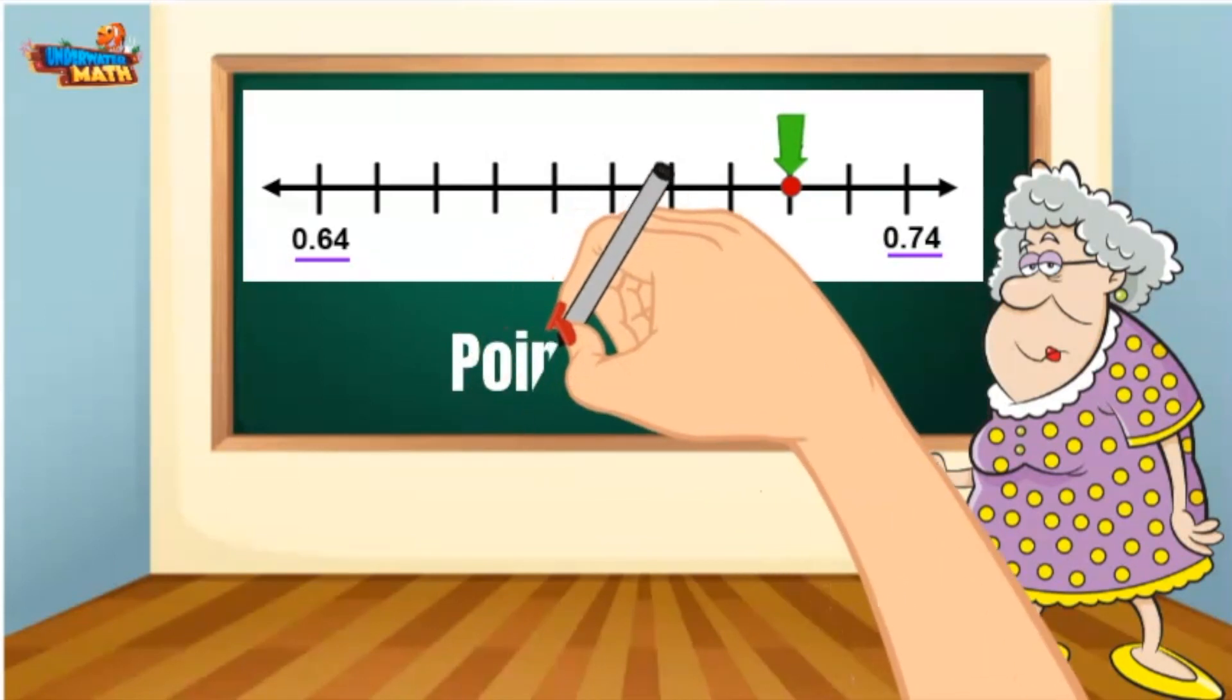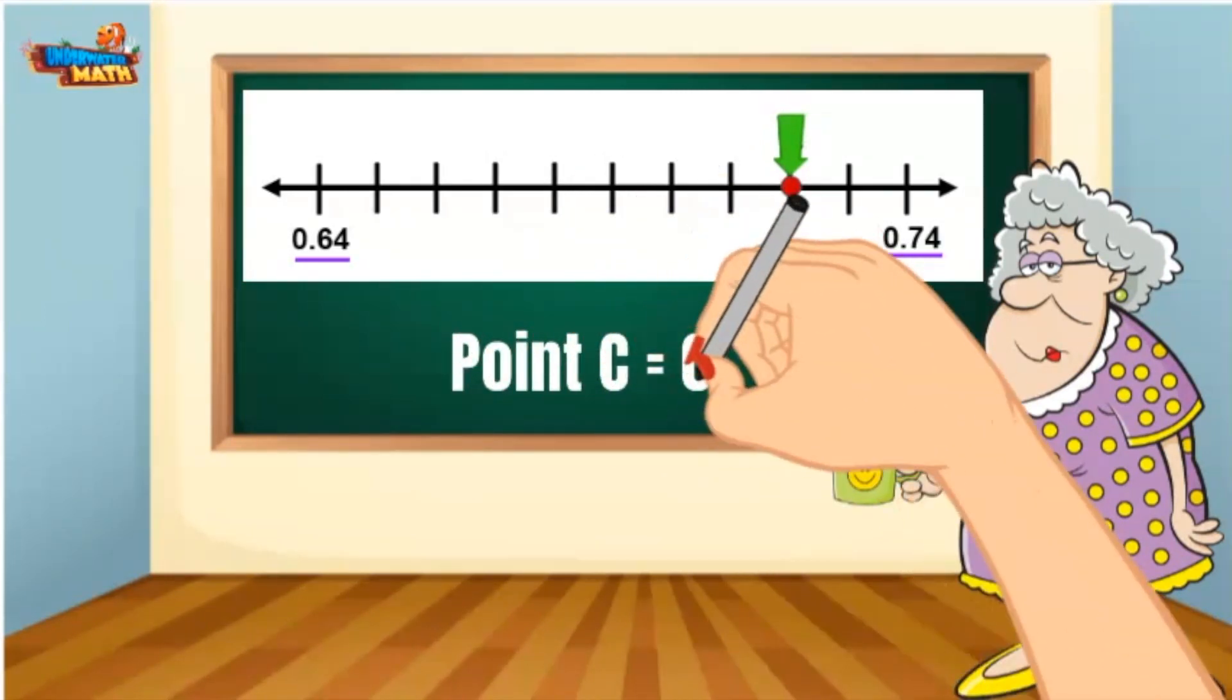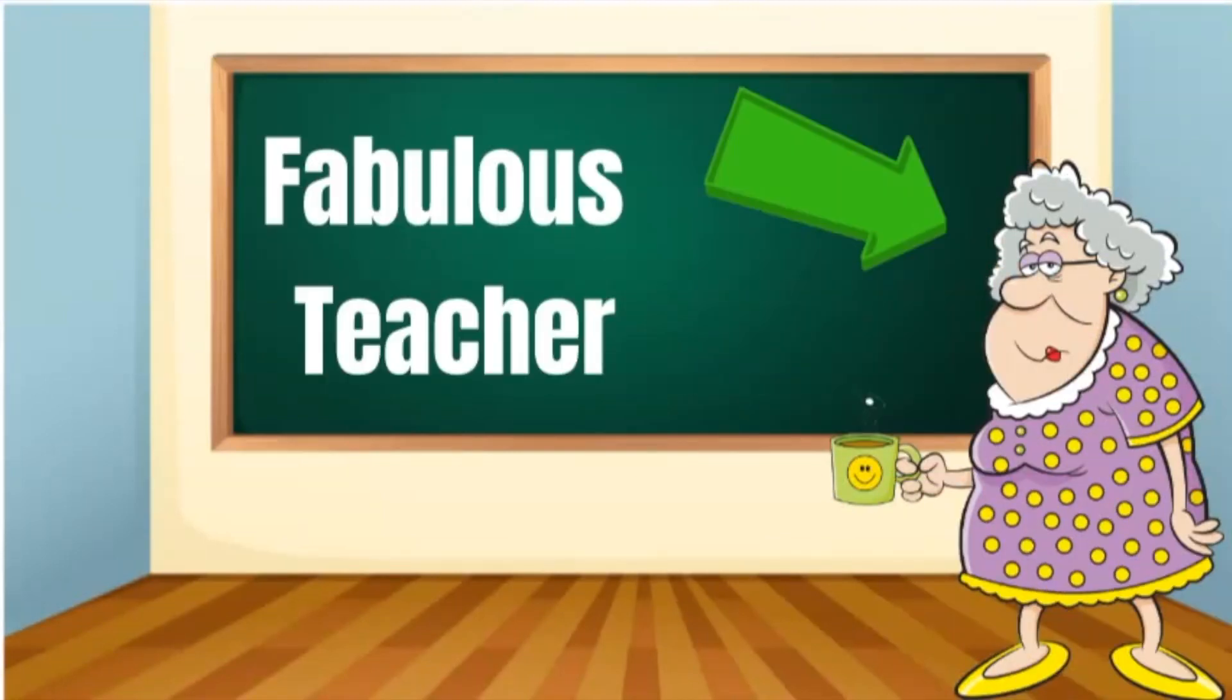That took long enough. Point C represents 72 hundredths. Well, this fabulous teacher is done teaching for today. Class dismissed.